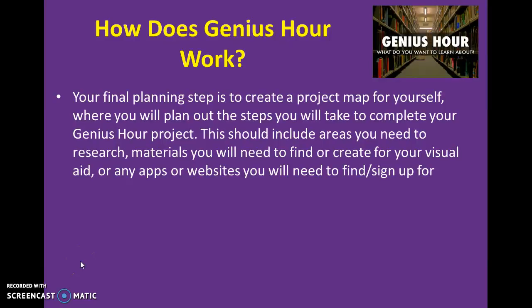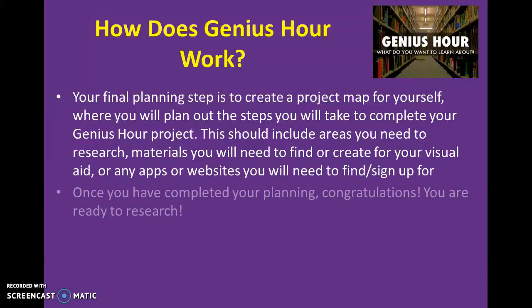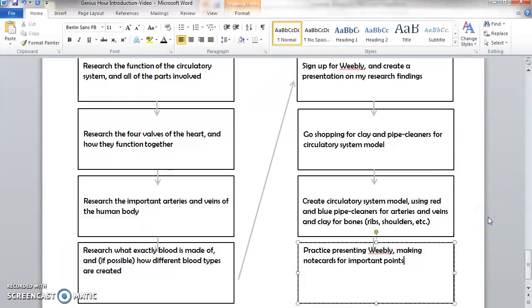Your final planning step is to create a project map — essentially a plan for how you're going to finish your project. You'll think about what you need to research, any materials needed for your visual aids, any apps or websites you'll need to find or sign up for, and everything else that goes into your project. In my example plan, I've listed four research areas, noted that I need to sign up for Weebly, and that I'll need to get materials to create my model.